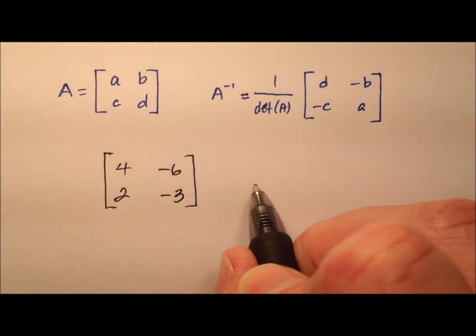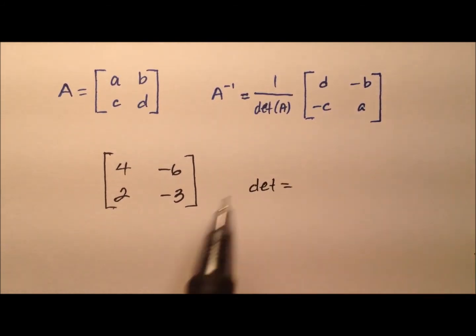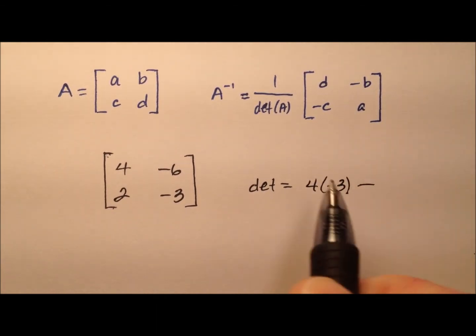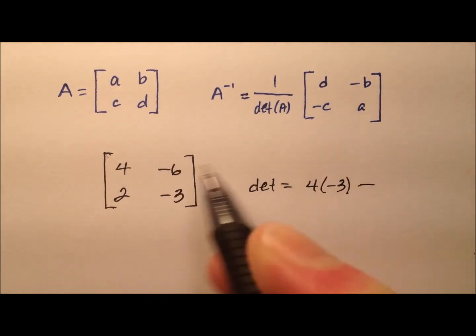Okay, so let's get started. So the determinant here for this matrix, we're going to multiply the entries here, so 4 times negative 3, and we're going to subtract the product here.